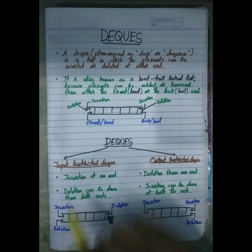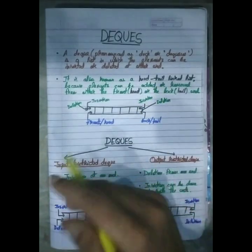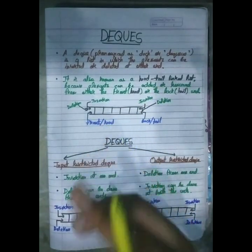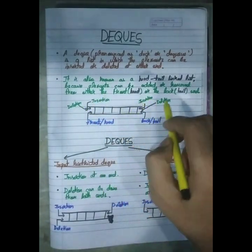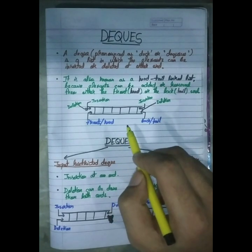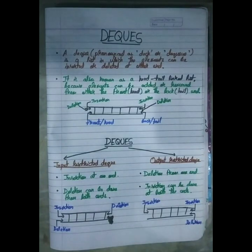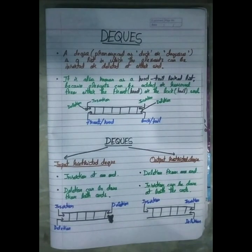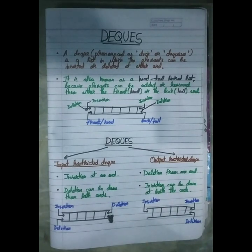DQ is also known as a head-tail linked list. This means that in a DQ, elements can be added or removed from either the front — you can say head — or the back — you can say tail end. We can call it a head-tail linked list because elements can be inserted as well as deleted from either the head or the tail. So we can do head-tail linked list.